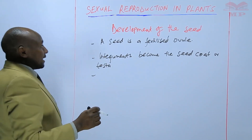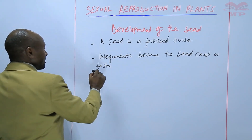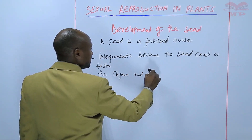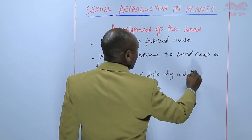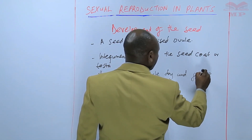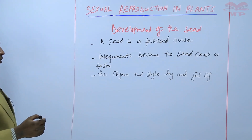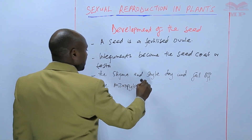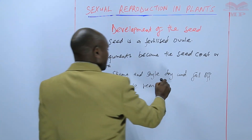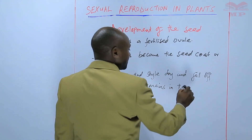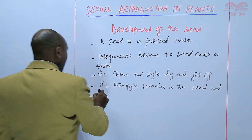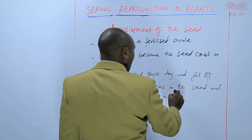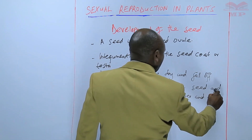Other parts of the flower, such as the stigma and style, dry and fall off. The micropyle remains in the seed, and it is the one that allows water and air into the seed.